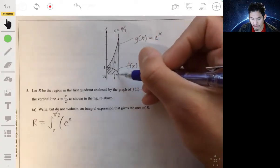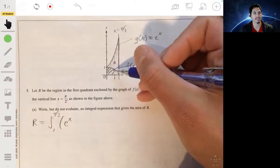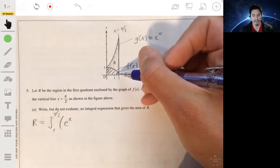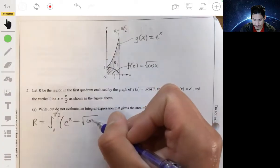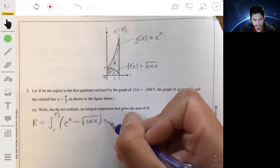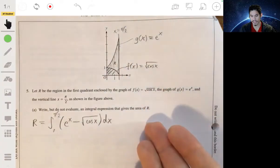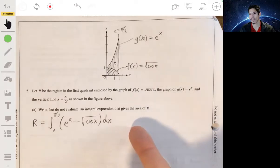But we got to track the semicircle sort of area thing, so we have to subtract the square root of cosine x. And that's it. Again, we don't have to evaluate this, that's all we need for that one.